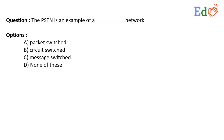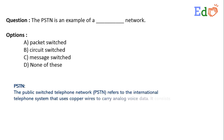In this question, we are asked: PSTN is an example of a blank network. To fill in this blank, we have four options: option A is packet switched, option B is circuit switched, option C is message switched, and option D is none of these. So let us define what PSTN is.